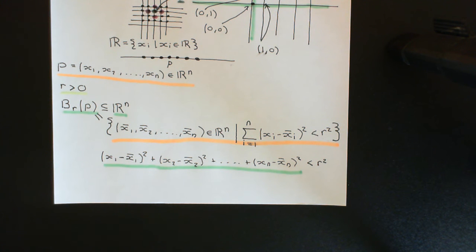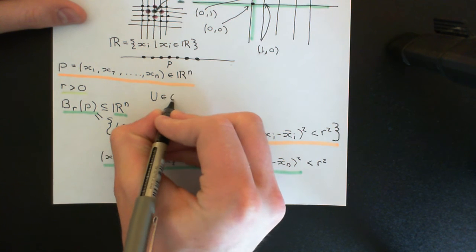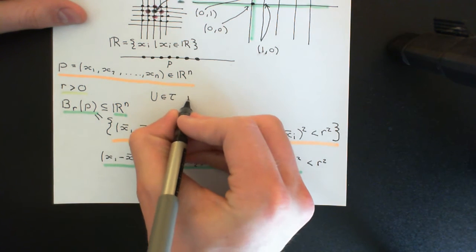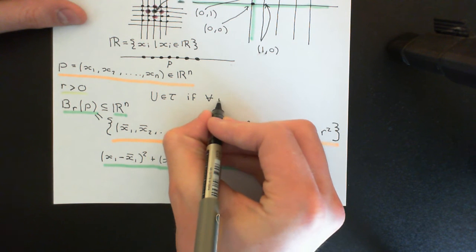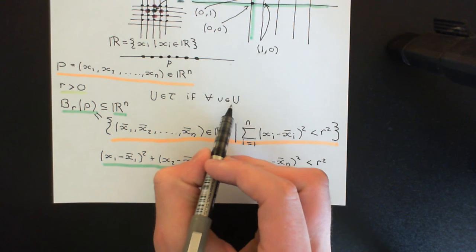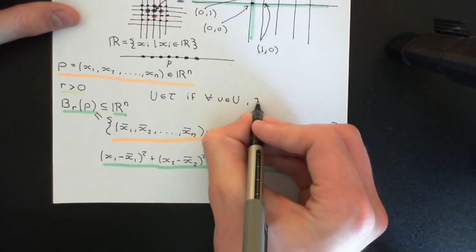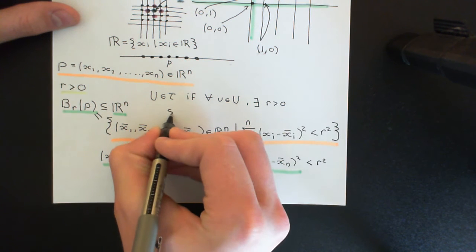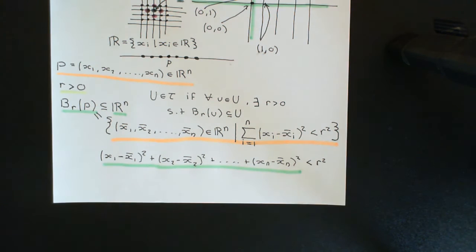Now what we're going to do is actually define the topology. We're going to define what subsets of Rn we're going to consider open sets — which sets we're going to put in the topology tau. A set U will be an element of the topology tau, which is going to be our standard topology, if U satisfies the condition that for all little u in capital U, there exists an R greater than 0 such that the ball of radius R around the point u is completely contained within the set capital U.